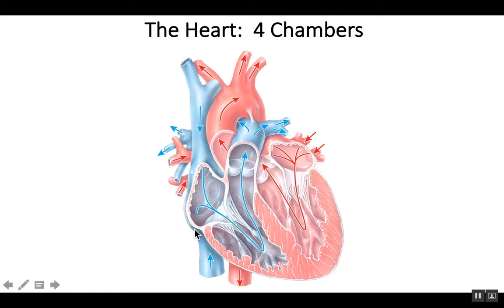The right side of the heart deals with the deoxygenated blood, getting it from the body and pumping it to the lungs. We often refer to the right side of the heart as in charge of our pulmonary circuit, sending blood to the lungs and bringing it back. The left side of the heart deals with our systemic circuit, pumping oxygenated blood throughout the body and then bringing it back.